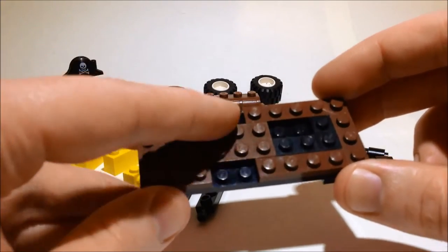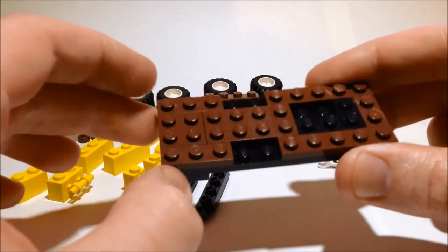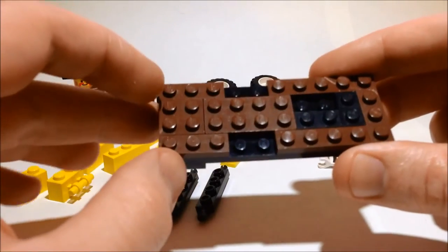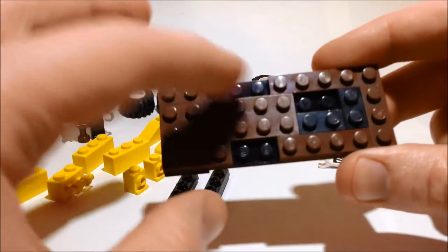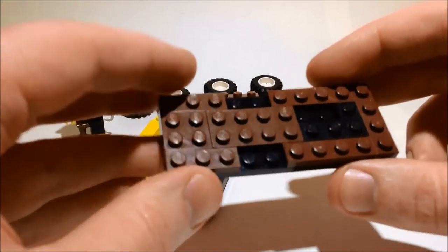These two pieces here can easily be substituted for a 2x6. I have gone with a 2x4 and a 2x2 because I don't have a 2x6 in old brown, which is what this car is built out of.